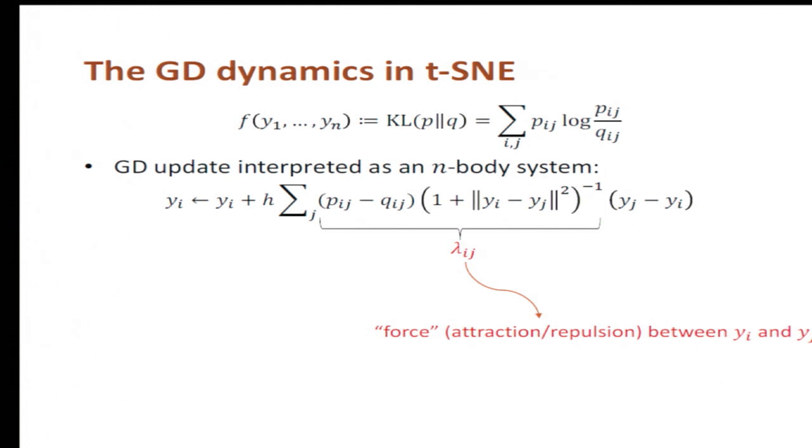So we can actually view this lambda_ij as a force between the two points Yi and Yj, and it can be either attraction or repulsion, depending on whether lambda_ij is positive or negative. From this viewpoint, we can interpret this algorithm as an n-body system, where every point Yi is evolving according to the forces coming from all other points.